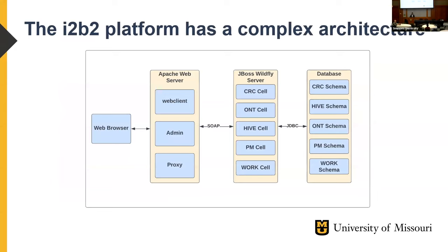We all know that the I2B2 platform has a complex architecture. We need at least three servers to run a functional I2B2: the Apache web server, JBoss Wildfly server, and the database server. In Apache web server we can have components like the web client, admin panel, and the proxy server. I2B2 users interact with the web client, which transfers user-generated queries to the I2B2 backend server, where those queries are translated into SQL and run against the corresponding database schema.